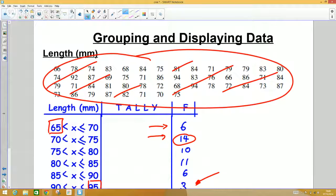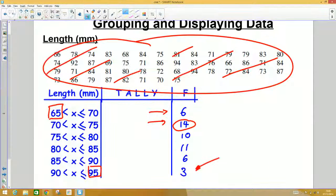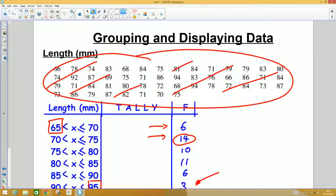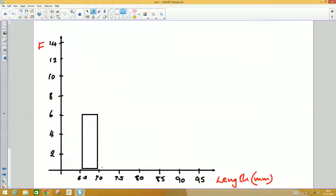Looking back at my data, the heights are going to be 6, 14, and 10. So I'll do them three at a time. I'll get my shapes here. The first one goes between 60 and 70, goes up to 6. The next one goes up to 14. Next one goes up to 10.